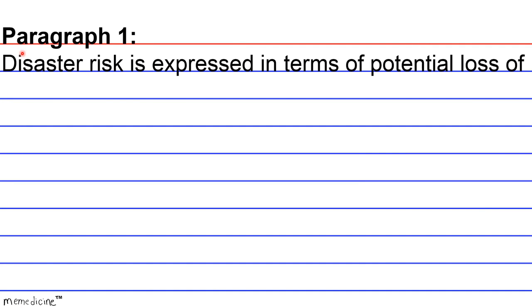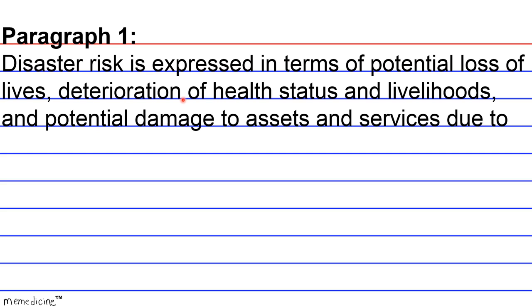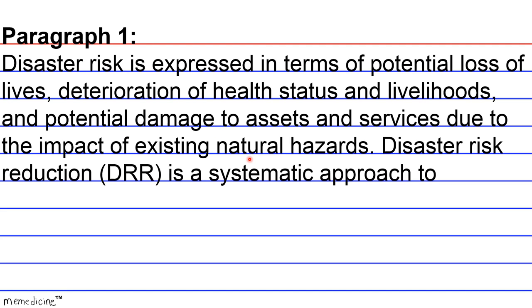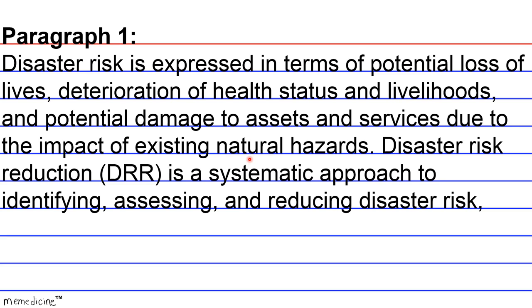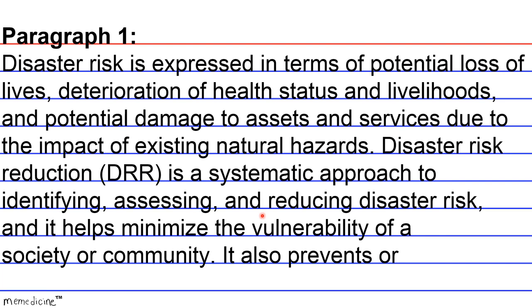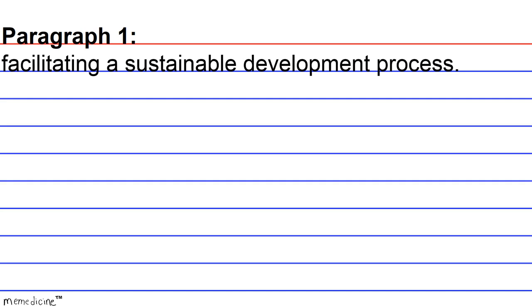Paragraph 1. Disaster Risk is expressed in terms of potential loss of lives, deterioration of health status and livelihoods, and potential damage to assets and services due to the impact of existing natural hazards. Disaster Risk Reduction is a systematic approach to identifying, assessing, and reducing disaster risk. It helps minimize the vulnerability of a society or community. It also prevents or mitigates the adverse effects of natural disasters, facilitating a sustainable development process.